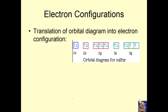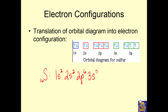An electron configuration is a different way to show where the electrons are, but instead of drawing boxes, you use numbers to represent the electrons. This is sulfur again — 16 protons, so we need 16 electrons. We say 1s2 because there are two electrons in that orbital, then 2s2, then 2p6 because the 2p sublevel has three orbitals for six electrons total, then 3s2, and 3p4. So this is still sulfur — 16 electrons, 16 protons — and this is called an electron configuration.